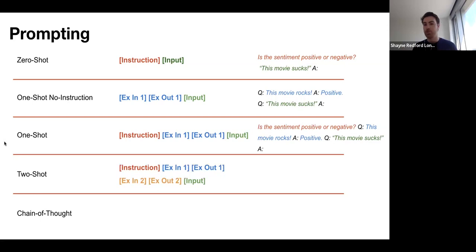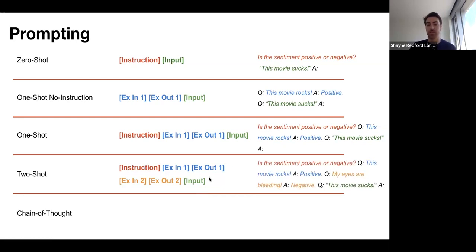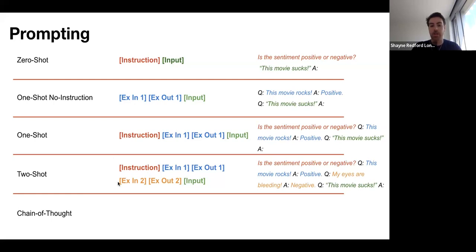One-shot can be generalized to two-shot, three-shot, or however many few-shot examples we want — this is generally called a few-shot paradigm. In two-shot, there's an instruction, a first input-output example, a different input-output example, and then a new input. The red is the instruction, the blue is the first input-output example, and the orange is a new input-output example — this time for a negative or bad movie review — before we ask about the review we care about. It's also common to repeat the instruction before each input block to reinforce the pattern.